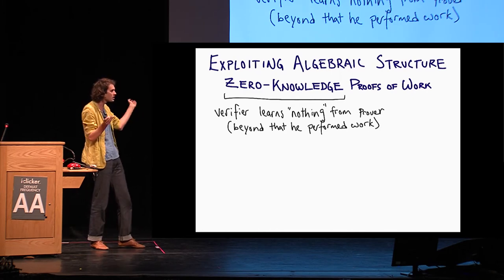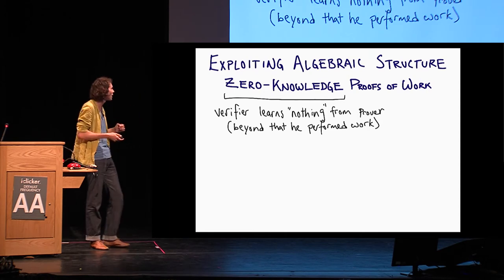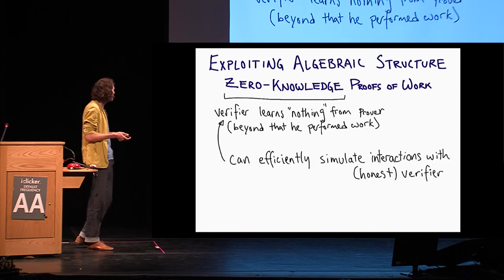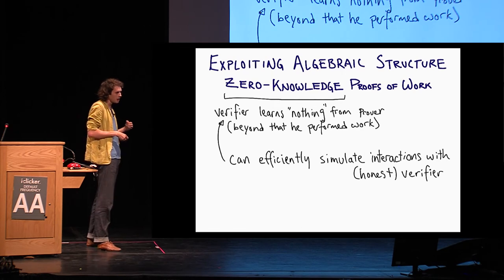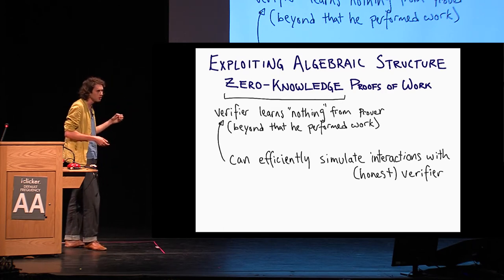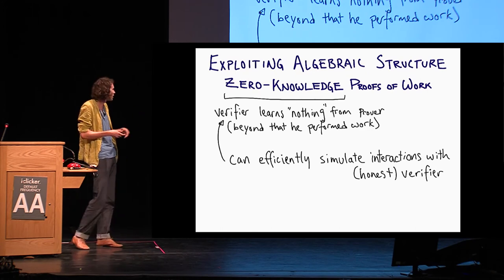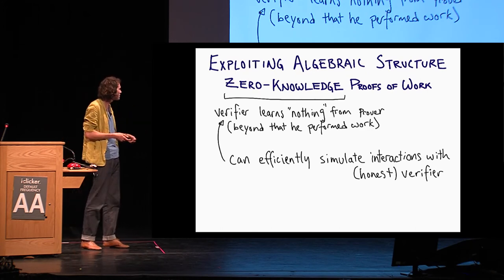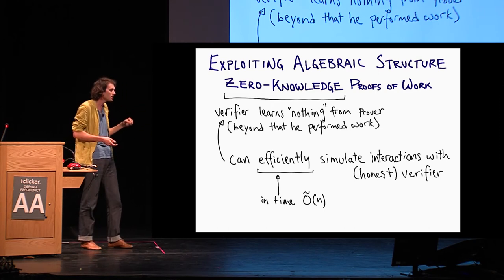What does this mean exactly? This means that the verifier learns nothing from the prover beyond the fact that he performs some work. He can't, say, take this proof and perform some other work essentially exploiting the prover's additional power or something like this. What does this mean, he learns nothing? It means that we can efficiently simulate interactions with an honest verifier. Efficiently here, we have to be a bit careful, because all of these problems I've been describing to you are actually in P. So our normal notion of zero-knowledge seems very trivial in some sense. But here, we're going to say efficiency means that you can simulate in quasi-linear time.